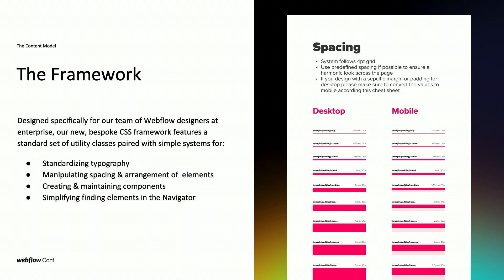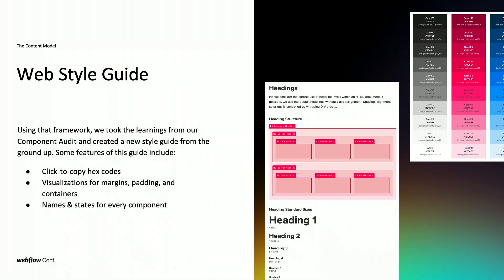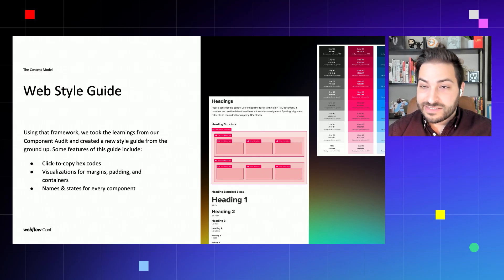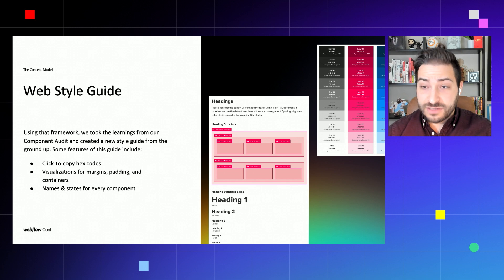New and experienced users of the content model alike could leverage this framework to create new pages, components, and update existing pages faster and better. To do this, we created a system of utility classes, typography classes, and classes to manipulate space above and around elements. Additionally, we created a system for sections in the navigator, which enabled us as Webflow users to better navigate and look for elements within our pages. To supplement the new framework, we created a WebStyle guide — a series of pages of standardized, documented classes, utility classes, components, and all the things you'd expect to see in a style guide, representing not only a series of components but also a CSS framework.